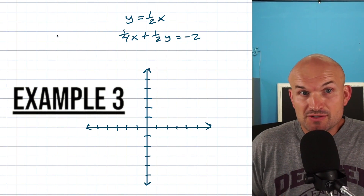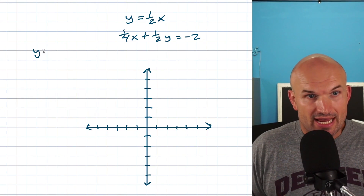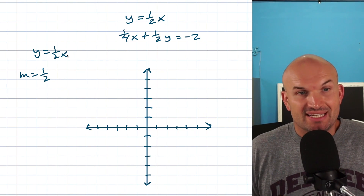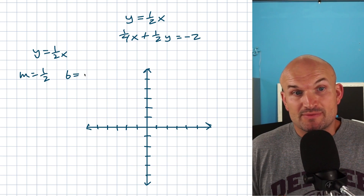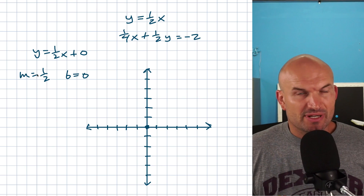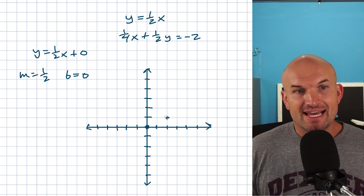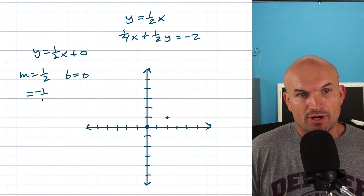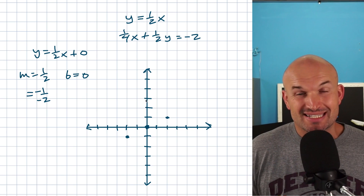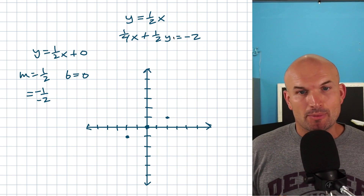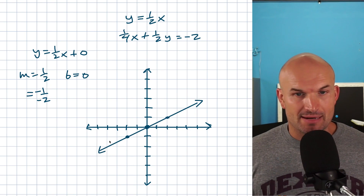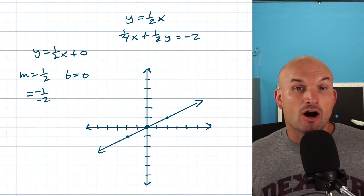In this third example we have two equations, and the first one is already solved for y: y equals one-half x. Our slope is one-half and we have no constant, so b equals 0 — you can write plus 0 if you like. This line passes through the origin. We follow the slope up 1 over 2, and remember you could also rewrite this as negative 1 over negative 2 since negative divided by negative is positive. I'll go in both directions to be prepared to extend the line either way.